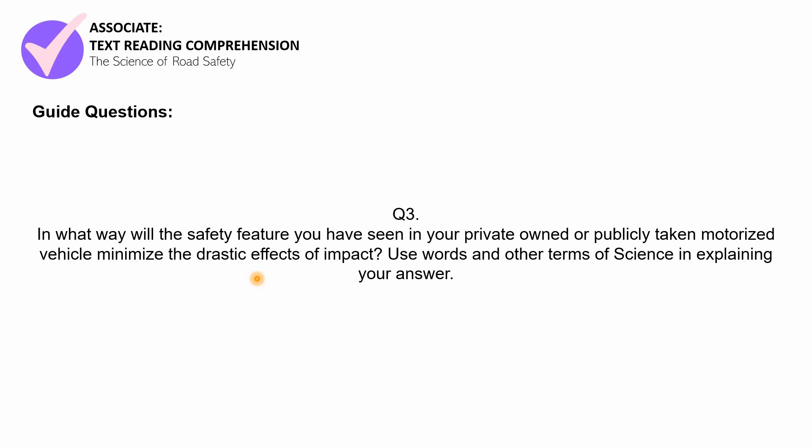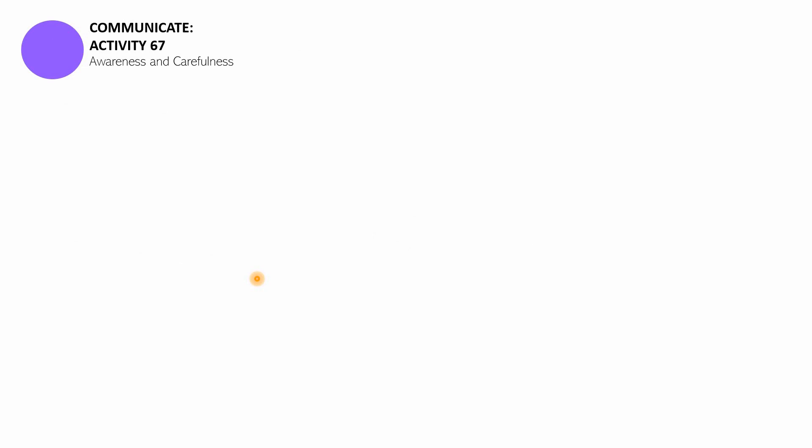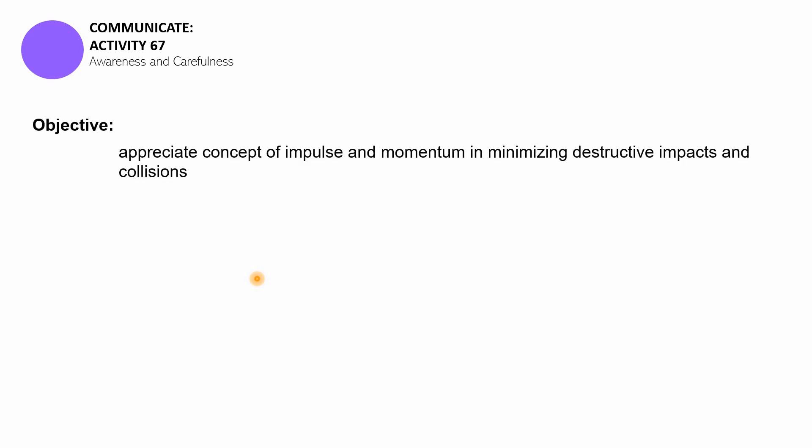Alright, so that is it for Associate Text Reading Comprehension — The Science of Road Safety. Let us now proceed to the second part, which is Communicate Activity 67, Awareness and Carefulness. The objective of this activity is for you to appreciate the concept of impulse and momentum in minimizing destructive impacts and collisions.